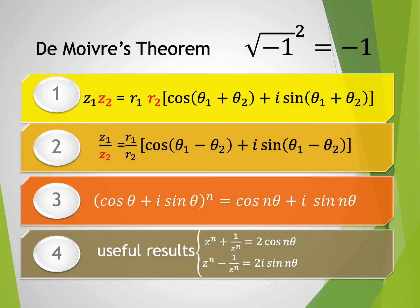Third formula: if the modulus equals 1, then cis(θ) to the power n equals cos(nθ) + i·sin(nθ). We just multiply the argument θ by the power n. The useful result: z^n + 1/z^n equals 2·cos(nθ). And lastly, z^n − 1/z^n equals 2i·sin(nθ). These are the four useful formulas to solve problems regarding complex numbers, especially to compute the higher powers of complex numbers.